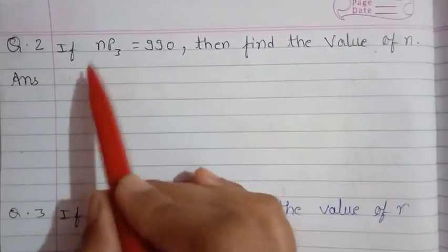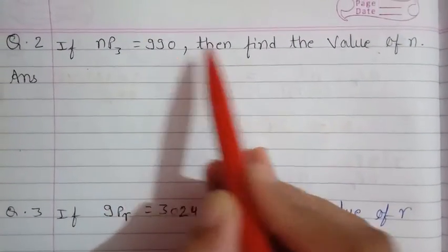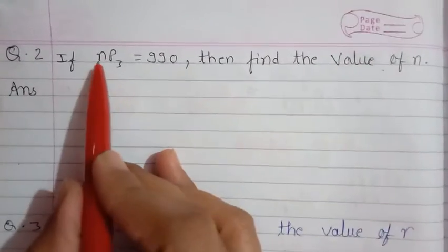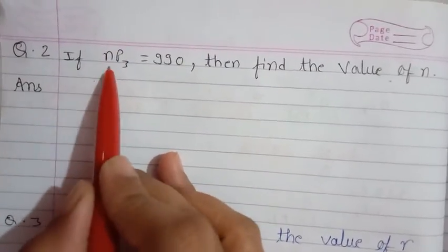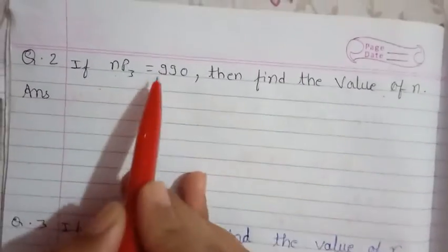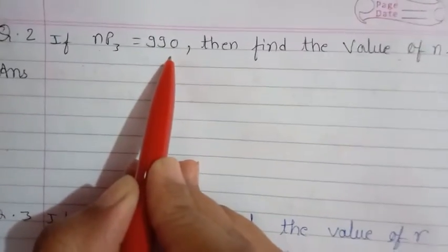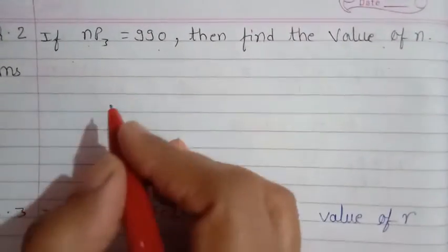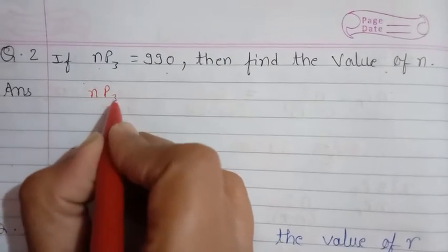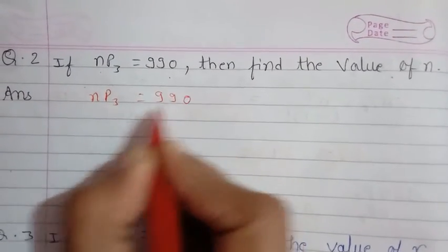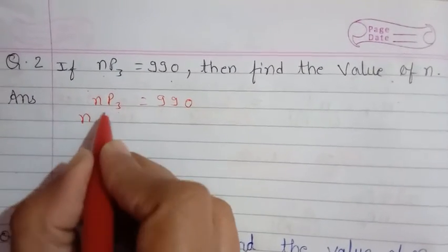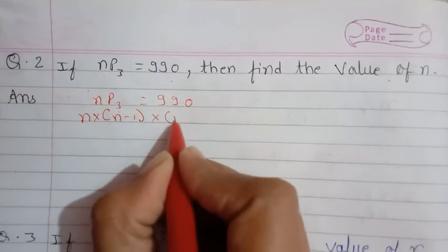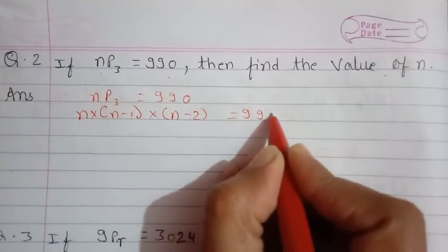Question 2: if nP3 equals 990, find the value of n. The value of n is not given; we have to find it. We know that nP3 equals 990. Since r is 3, using the alternative expansion: n multiplied by (n−1) multiplied by (n−2) equals 990. We need to find three consecutive numbers whose product is 990.